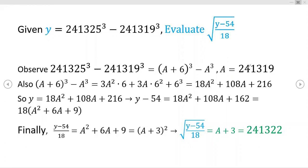If we take a to be 241,319 and add six to this, we get the 25, not counting the cubes here, right? And so all of a sudden, this expression takes on a more manageable looking form.